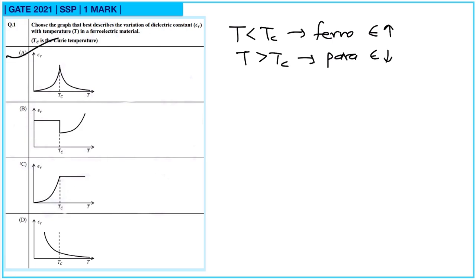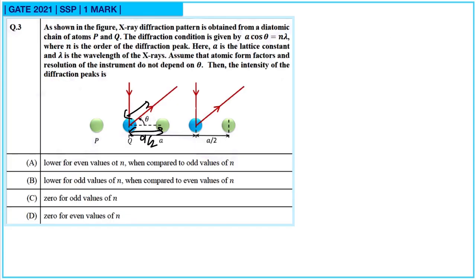So the dielectric constant will decrease above Tc, and option A is correct. Next, question number three: as shown in the figure, an X-ray diffraction pattern is obtained from a diatomic chain of atoms P and Q. The diffraction condition is given by A cos θ = Nλ, where N is the order of diffraction peak, A is the lattice constant, and λ is the wavelength of the X-rays.